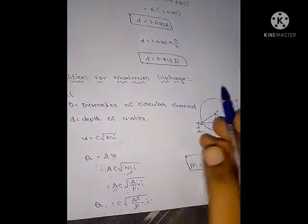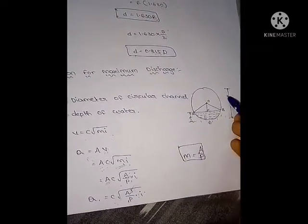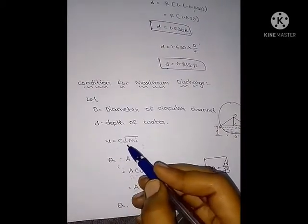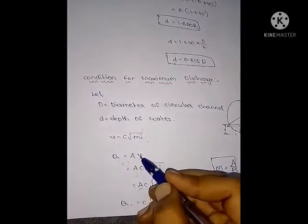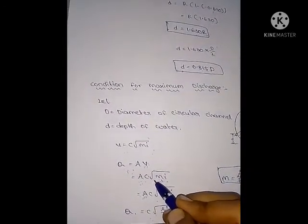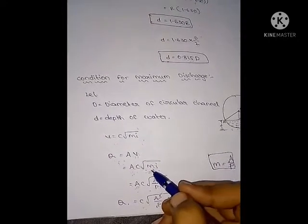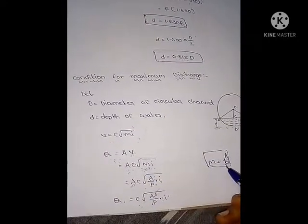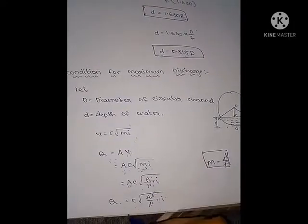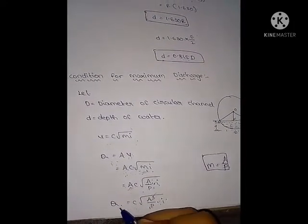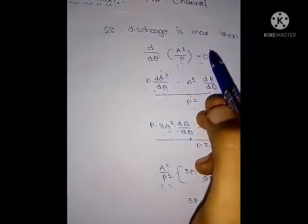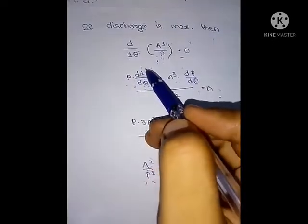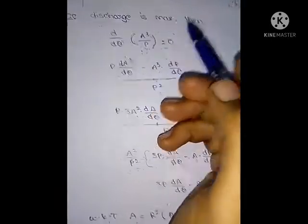Next, the condition for maximum discharge. From the diagram, small d is the depth of water and capital D is the diameter. We know V = C√(MI) and discharge Q = A·V = A·C√(MI). Since M = A/P, substituting gives Q = C√(A³/P · I). If discharge is maximum, then d/dθ(A³/P) = 0.